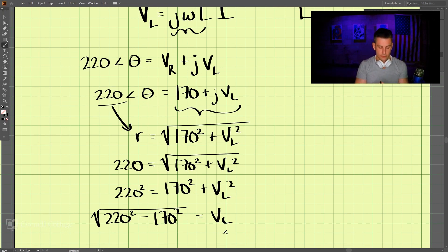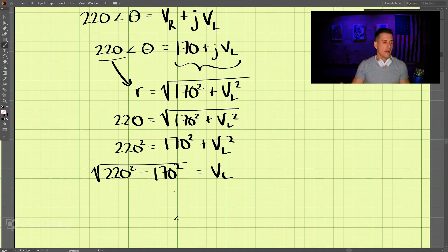Let's do that: 220 squared minus 170 squared, and taking the square root, we have VL is equal to 139.6 volts. That is our solution for the RL circuit.